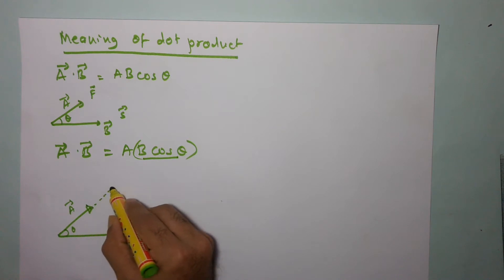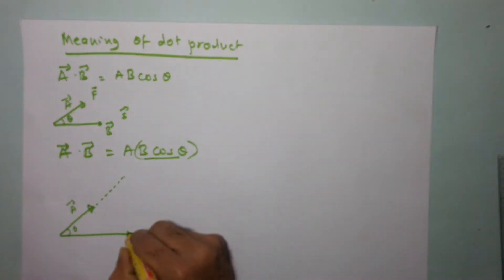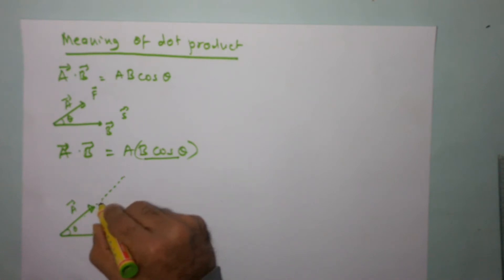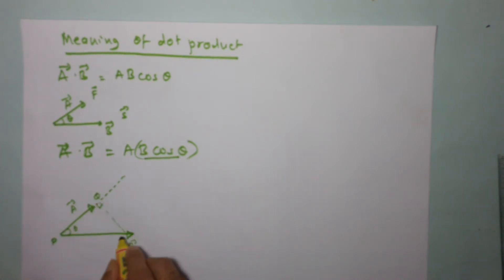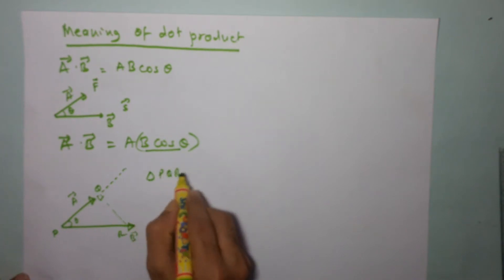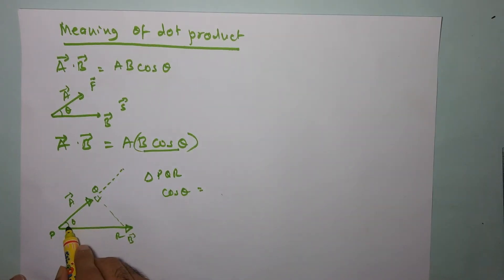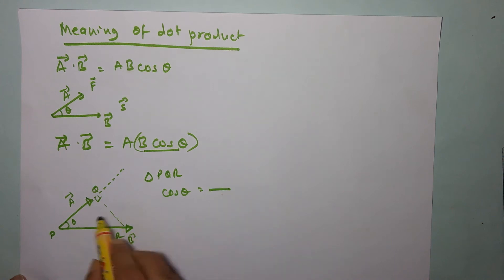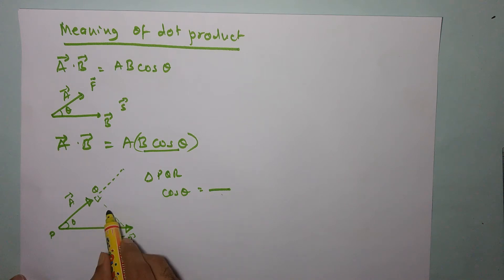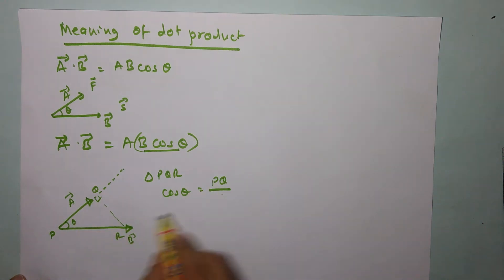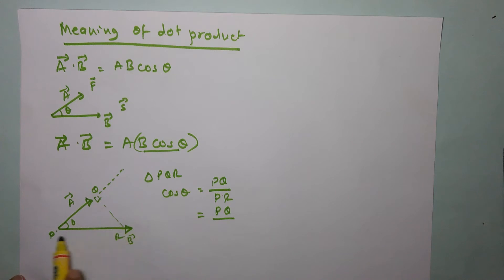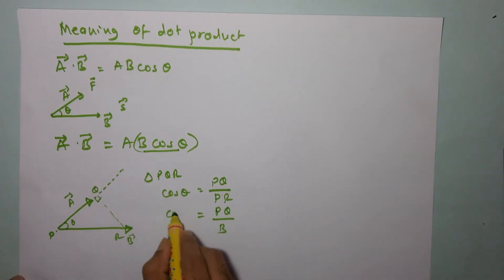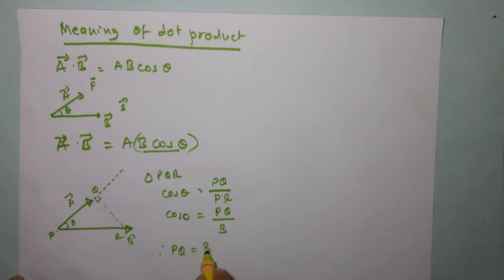I will extend vector a, and from the tip of vector b, I will draw a perpendicular onto it. Let's call this triangle PQR, where this angle is theta and the right angle is at Q. In triangle PQR, cosθ equals the adjacent side over the hypotenuse. Since PR is the hypotenuse — which is the magnitude of vector b — we get cosθ = PQ / PR = PQ / b. Therefore, PQ equals b cosθ.